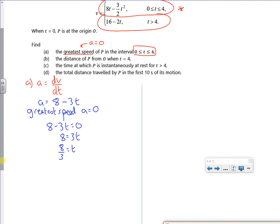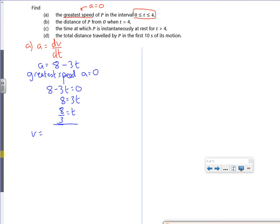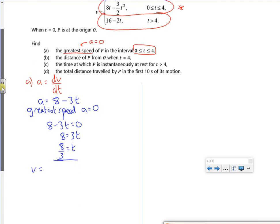Now that gives me the time, and then I just want to sub that now into the velocity. So my velocity is 8 lots of 8 over 3, minus 3 over 2, 8 over 3 squared, gives me a velocity of 32 over 3 meters per second. So that's the first bit done.